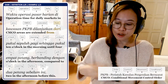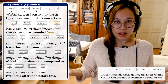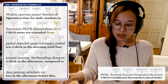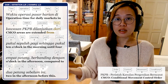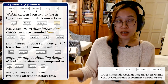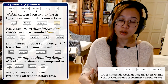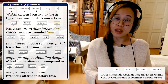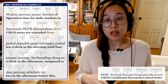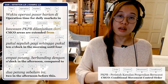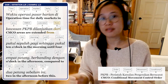PKPB means Conditional Movement Control Order — the CMCO — due to the coronavirus. Dilanjutkan means lengthened, dari pukul 10 pagi from 10 in the morning, sehingga pukul 4 petang until 4 o'clock in the afternoon, berbanding dengan 2 petang sebelum ini compared with 2 o'clock before this. So it's been extended by two hours. Because it is talking about a period of time — from 10 a.m. until 4 p.m. — you use Dari, not Daripada.